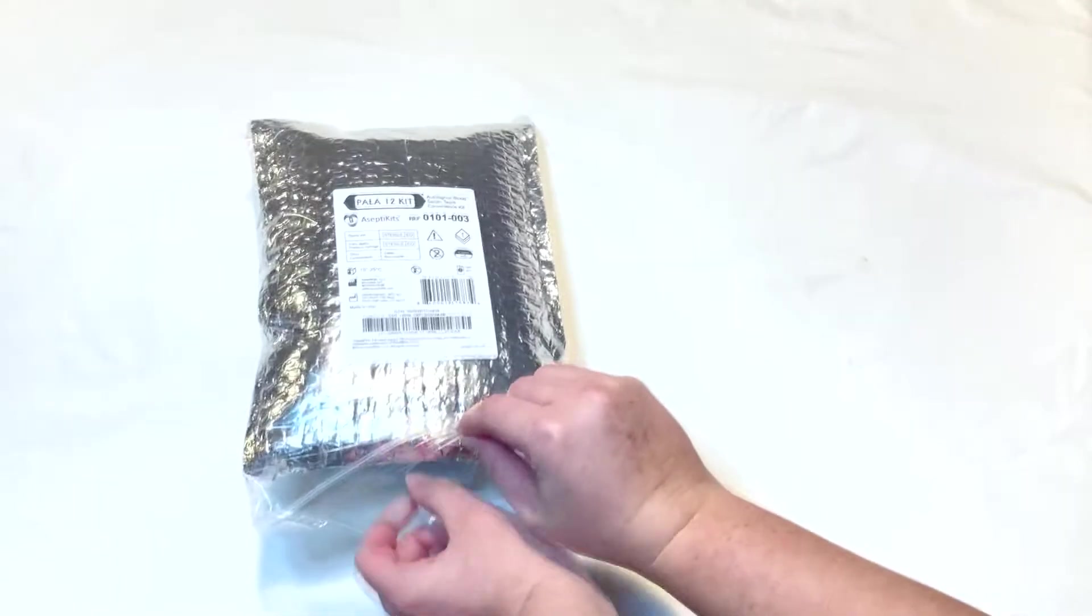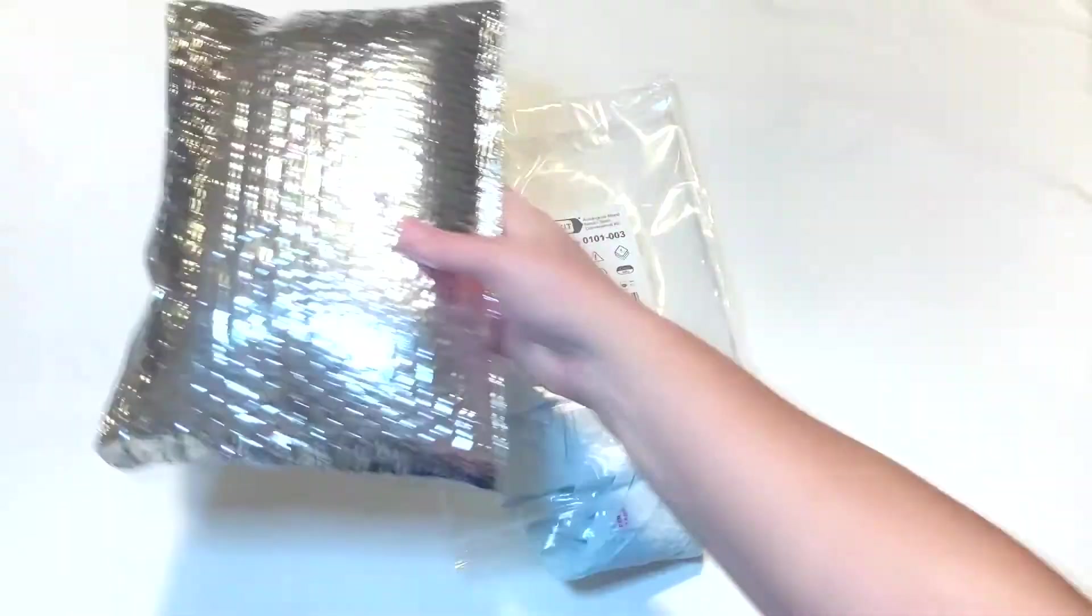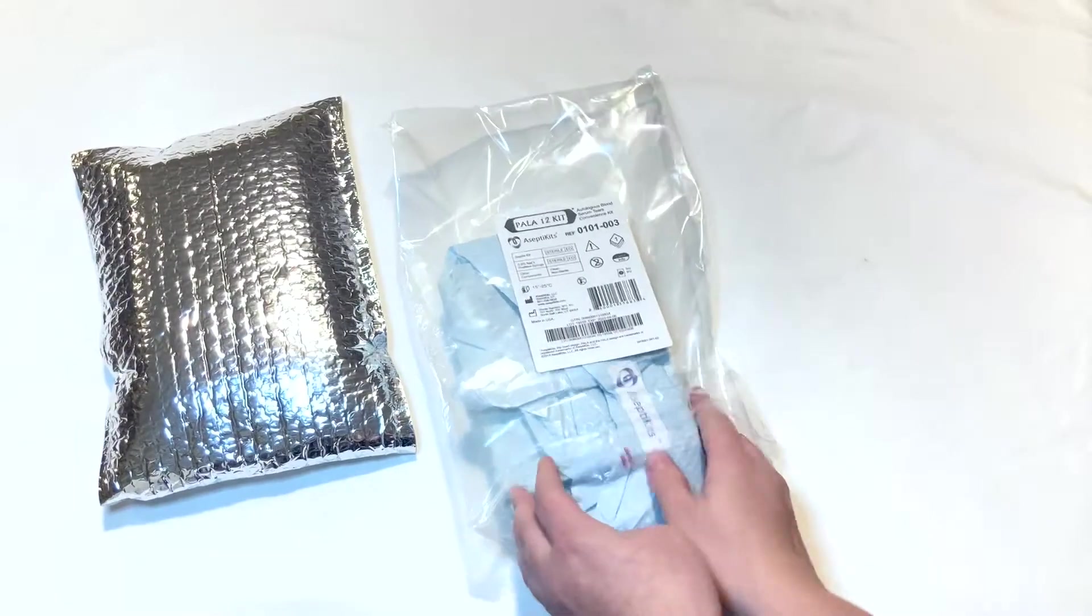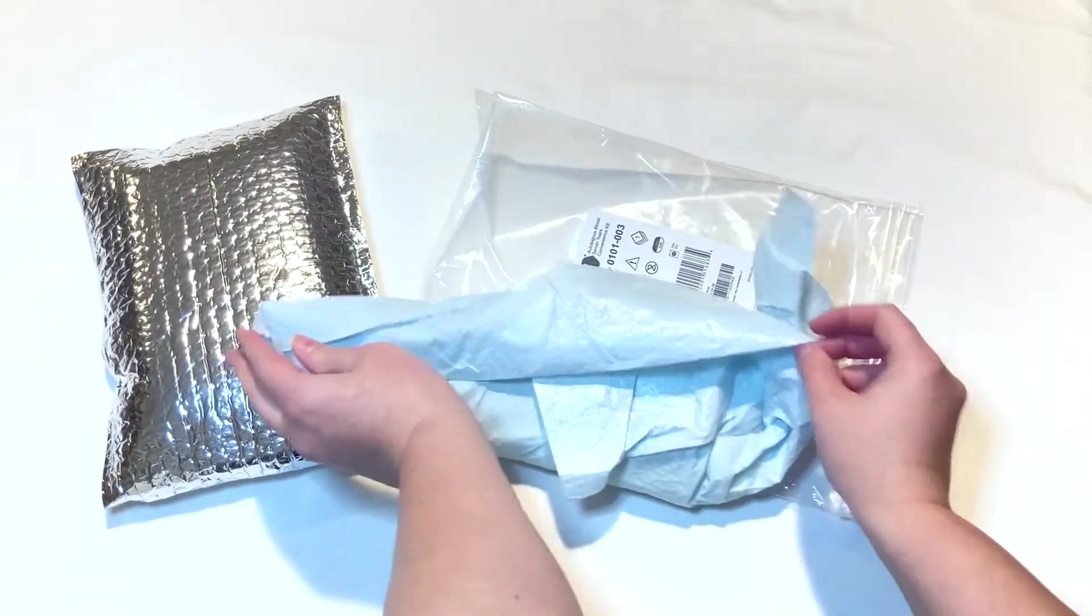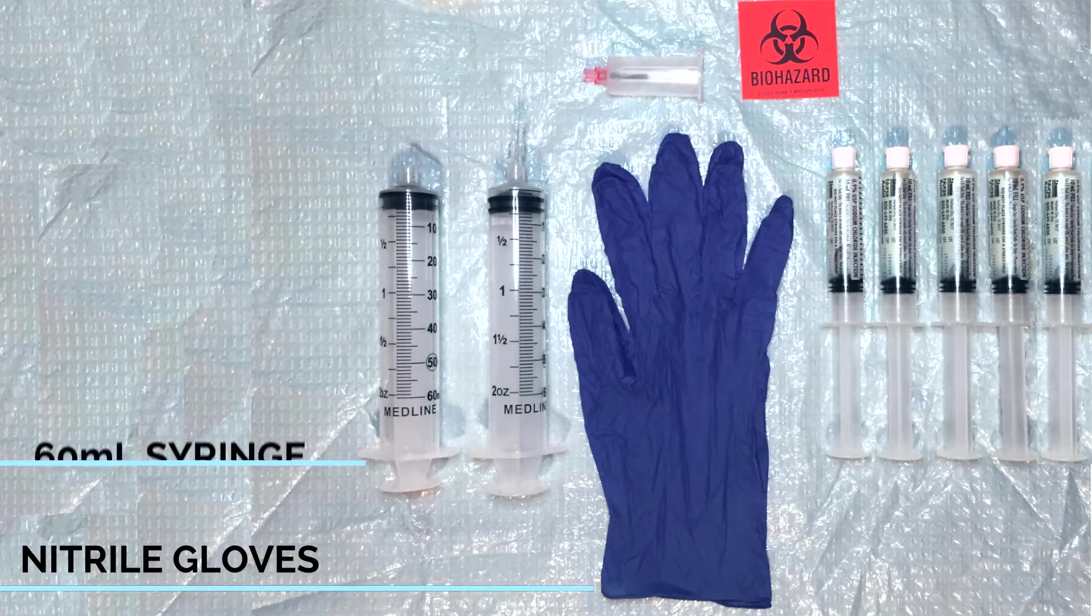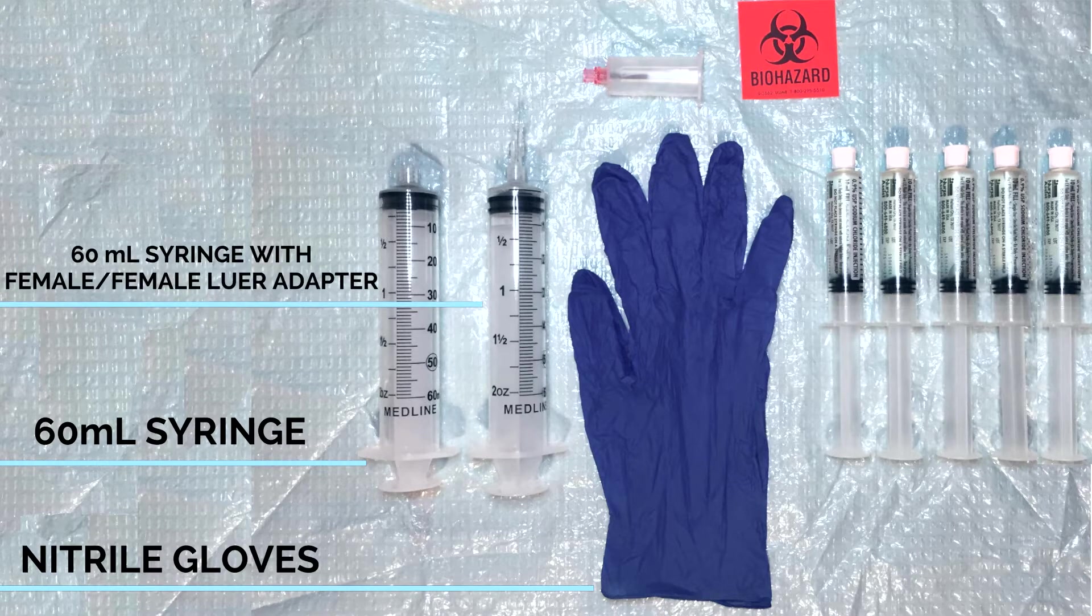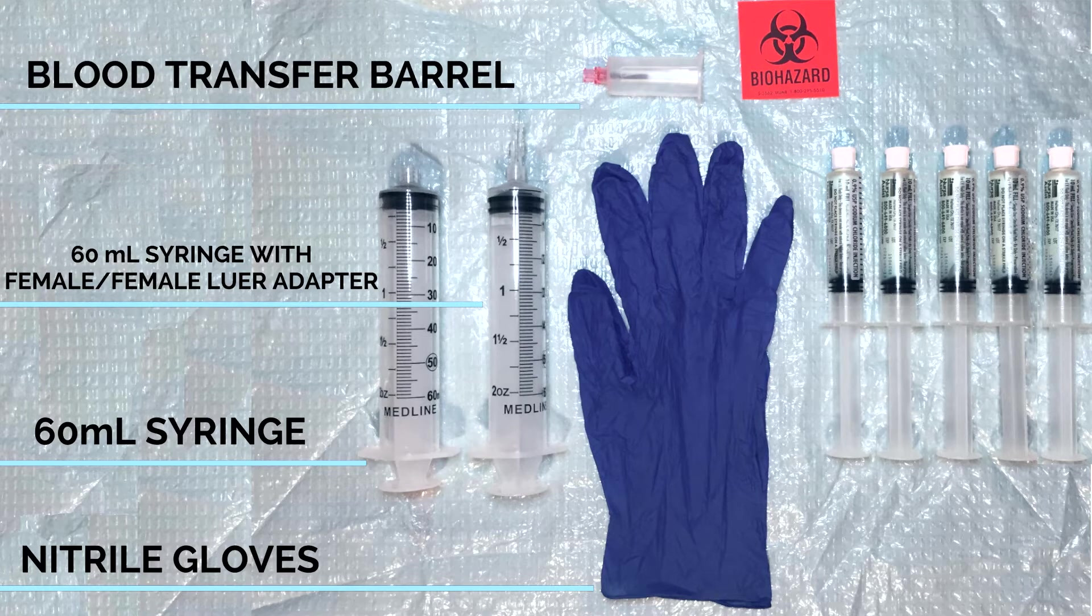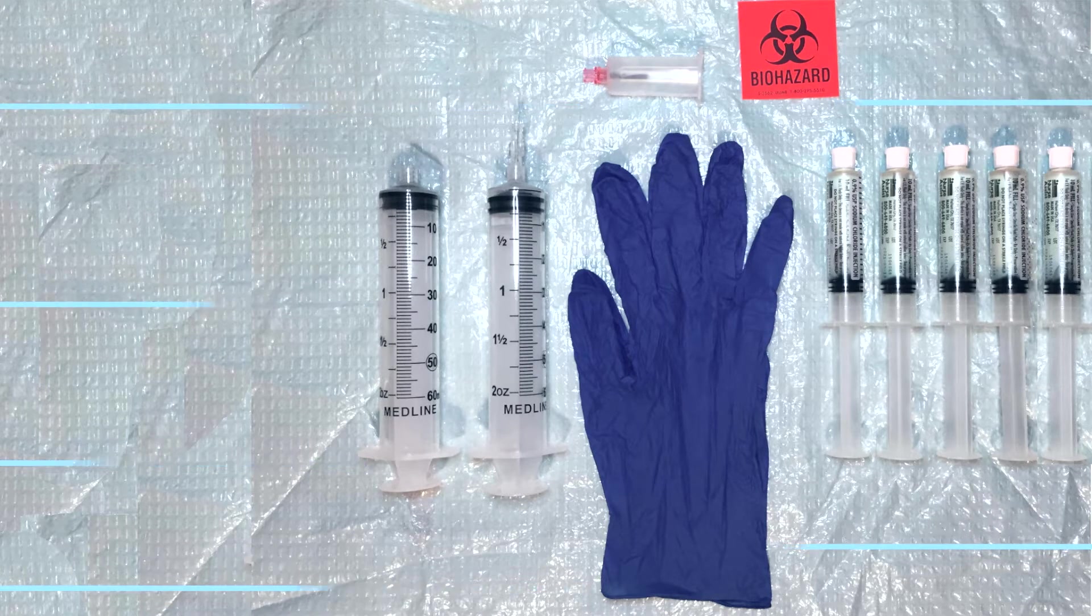Open the Paula 12 convenience kit. Inside, you'll find the Paula 12 sterile kit and the Paula 12 prep kit. Select and unwrap the prep kit supplies. The prep kit is packaged clean. Inside the prep kit, you'll find nitrile gloves, a 60 milliliter luer lock syringe, a second 60 milliliter syringe with a pre-attached female-to-female luer adapter, a blood transfer barrel with a female luer lock, five sterile 10 milliliter saline syringes, and a biohazard label.